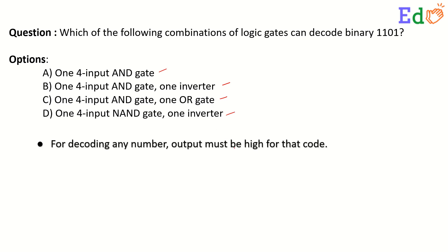Decoding binary 1101 requires that the output must be high for that code. We basically need a 4-input NAND gate with one inverter to decode 1101 because for NAND gate the output is